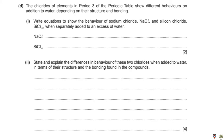For sodium chloride, which is ionic, we write NaCl plus aq, which forms Na⁺ ions and Cl⁻ ions. If we add state symbols that would be (s) for solid, and (aq) for each of the dissolved ions.